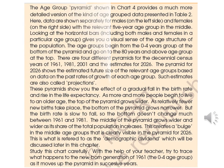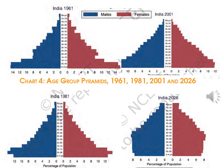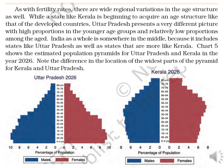Students, on page number 25, go through the age group pyramid shown in chart 4. As with fertility rate, there are wide regional variations in the age groups as well. While a state like Kerala is beginning to acquire an age structure like that of developed countries, Uttar Pradesh presents a very different picture of high proportions in the younger age groups and relatively low proportions among the aged. India as a whole is somewhere in the middle, as it includes states like Uttar Pradesh as well as states more like Kerala.